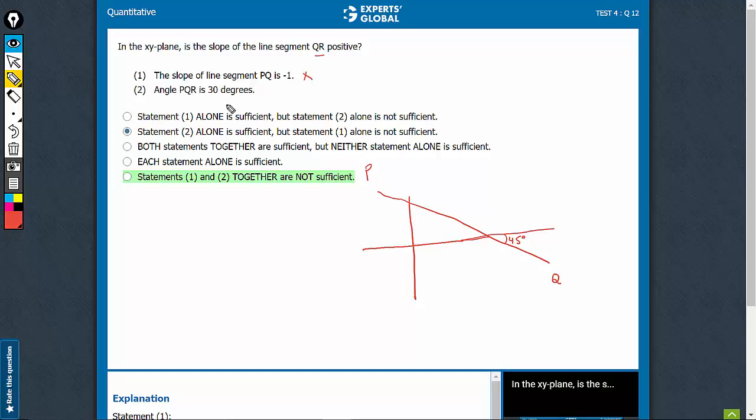Statement 2 says that angle PQR is 30 degrees. Remember, we cannot combine it yet. We have to look at statement 2 alone. So PQR is 30 degrees. We know nothing about PQ right now if we look at statement 2 alone.